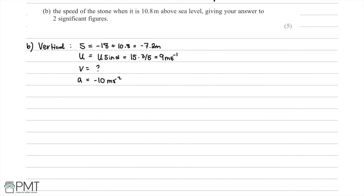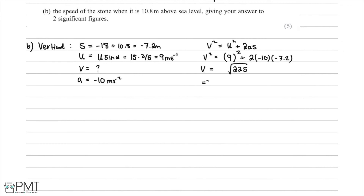Using v squared equals u squared plus 2as for the vertical component: v squared equals 9 squared plus 2 times negative 10 times negative 7.2, which equals 81 plus 144 equals 225. So the vertical velocity v equals the square root of 225 equals 15 meters per second. For the horizontal component, v equals u cos alpha equals 15 times 4 over 5 equals 12 meters per second.